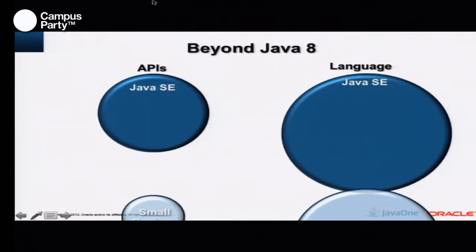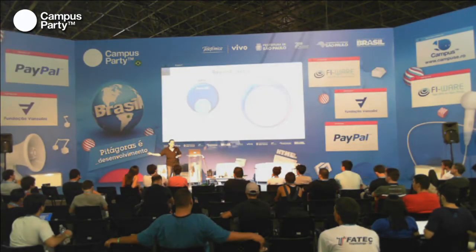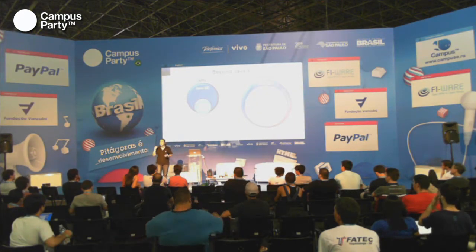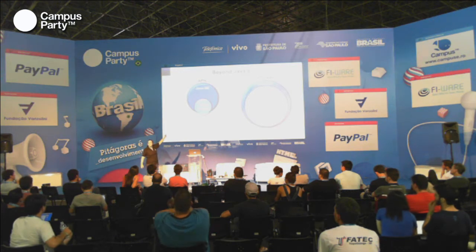Finally, the language is going to be the same. We're talking about lambdas in Java SE — we're going to have lambdas on small devices in Java ME too. The APIs are going to be the same. There might be one different portion — what we call the Device Access APIs. Those are APIs that allow you to connect to peripherals: sensors, lights, LEDs, switches, motors. Those hardware-specific APIs are the ones that probably won't be part of standard Java SE.